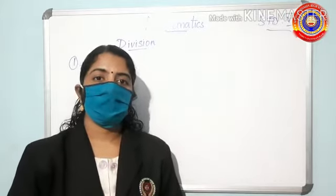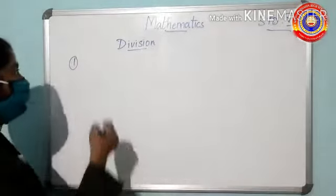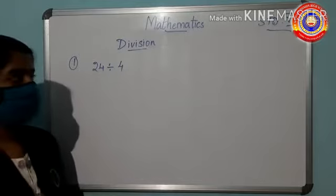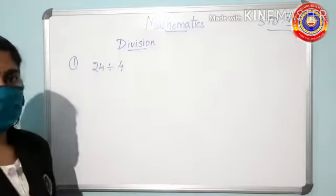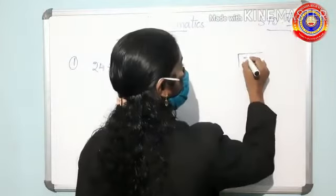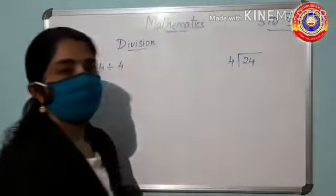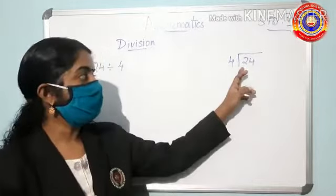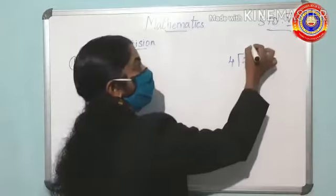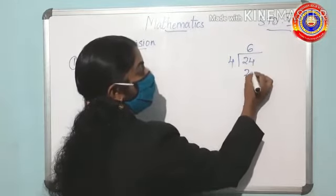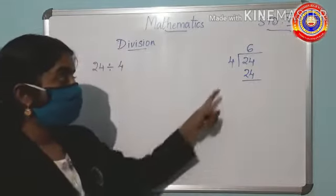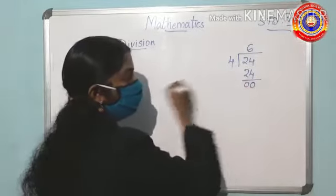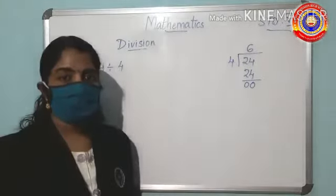Now we shall do a division with a two-digit number. Do you know how to divide 24 by 4? 4 into which number gives 24? 4 × 6 = 24, so write 6 here. 4 into 6 is 24, then subtract: 4 minus 4 is 0, 2 minus 2 is 0. The answer you got is 6.